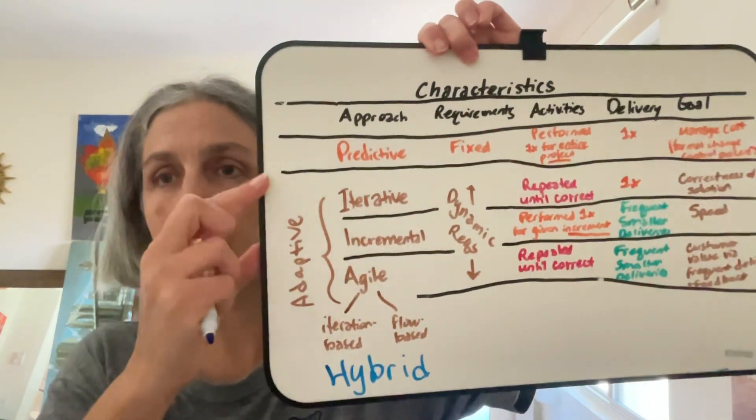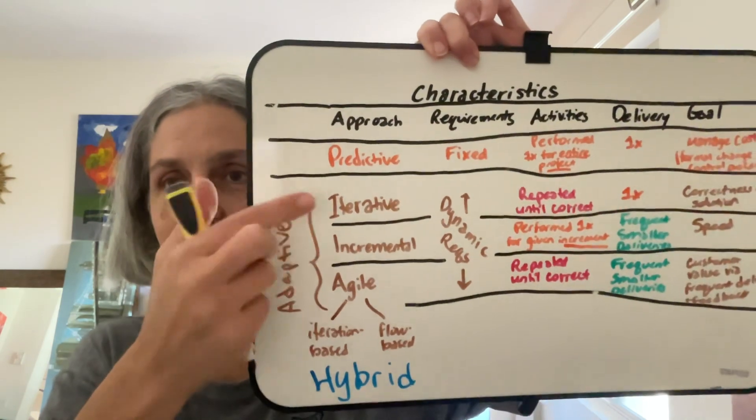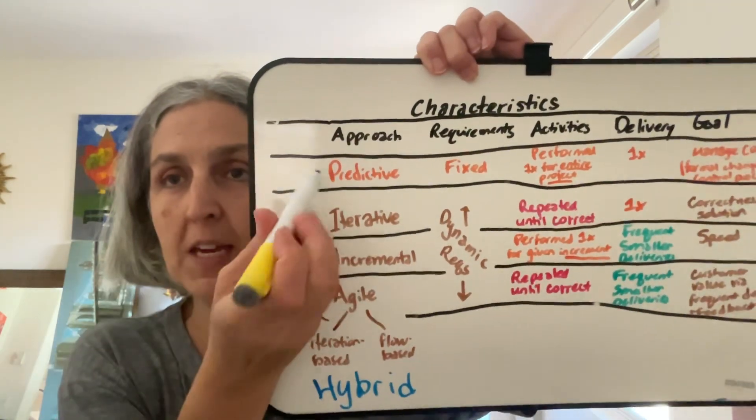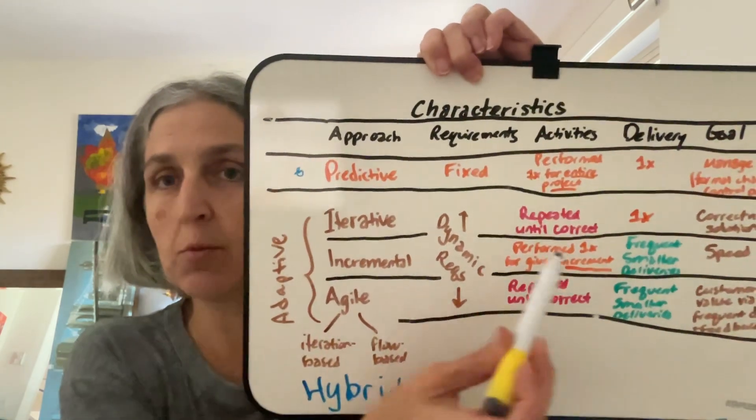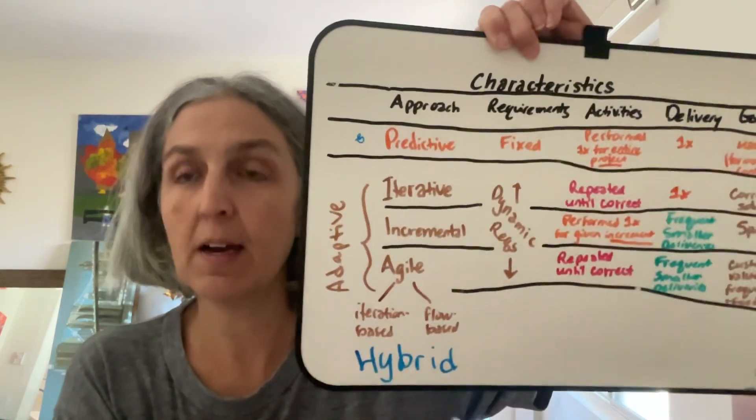So those are all our adaptive approaches. Also not shown in the book, but I'll add in here: you can actually have a third development approach — a hybrid approach. So we have the predictive approach, we have our adaptive approaches and all their types and subtypes, and then we can have a hybrid approach whereby you're taking a predictive approach and combining it with one or more of those adaptive ones. That could be because part of your work involves easily definable work — use a predictive approach for that — and other parts have lots of uncertainty, so you use an agile approach for that aspect.